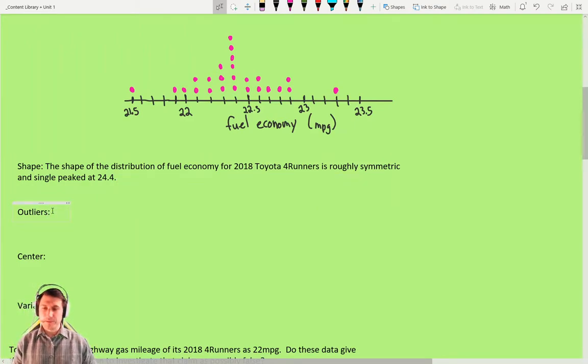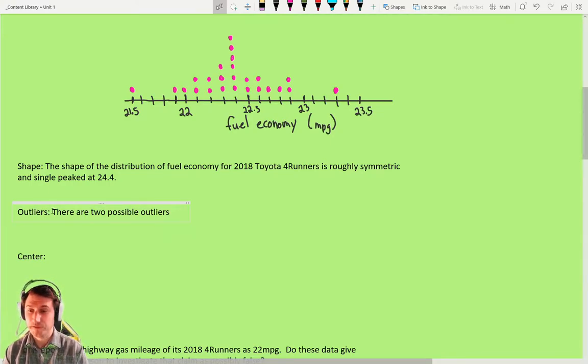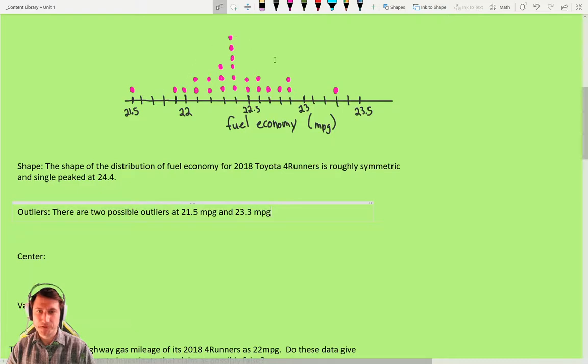Next, you describe the shape. Sometimes there are pieces of data that don't fit that shape. Are there any outliers, pieces that don't fit? And in this case, we actually have two. There are two—now I'm going to say possible outliers because we haven't calculated if they're outliers yet. And there is a calculation for that at 21.5 miles per gallon and 23.3 miles per gallon. We're not sure if they're outliers, but they definitely don't seem to fit the general shape. They're kind of far out.